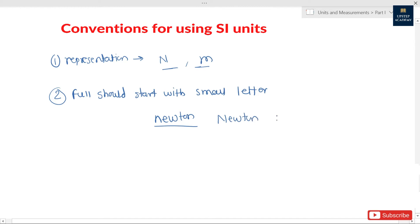Or one more example I can give you: kelvin should be the name of unit, not Kelvin. I hope the second convention is also clear to you. Third convention is no plural form. It means what? We can't say that I have 10 meters of string. We can't say 10 meters, we have to say 10 meter.